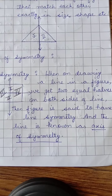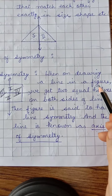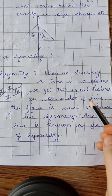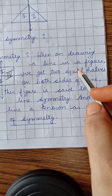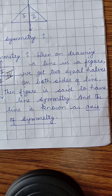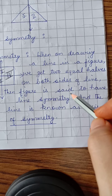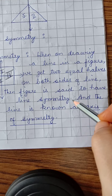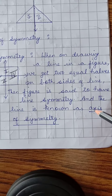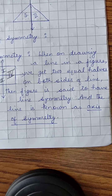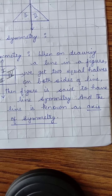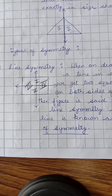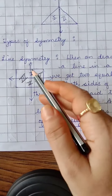Now, types of symmetry — symmetry is of two types. The first is line symmetry. When on drawing a line in the figure we get two equal halves on both sides, this type of symmetry is called line symmetry. The line is known as the axis of symmetry, because around this line we can divide the figure into two equal parts.